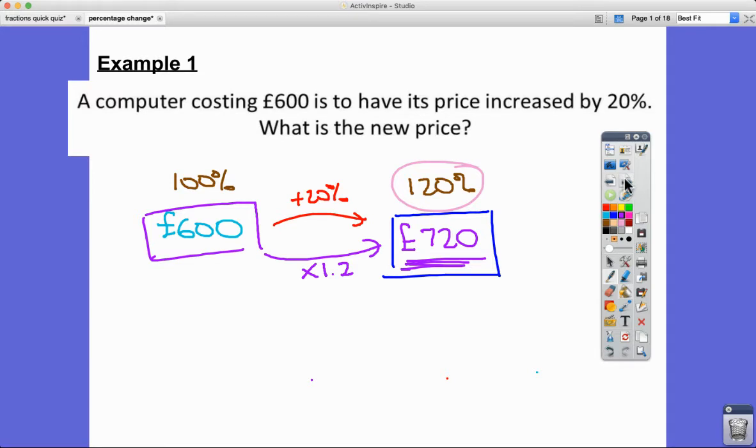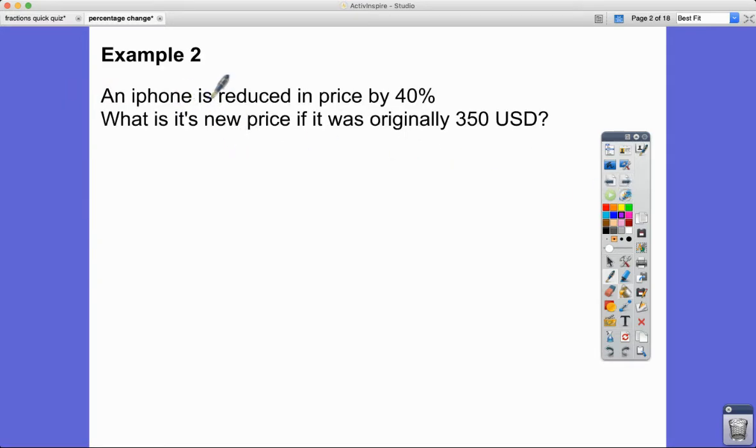Hopefully the next one's just as easy. So this time we've got an iPhone and it's been reduced in price by 40%. Its original price is US$350 and it's been decreased in price by 40%. So if we think again about this being 100% and if we take 40% off that, that becomes 60%.